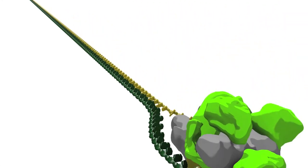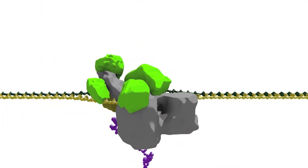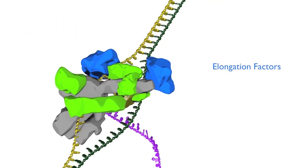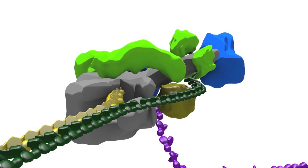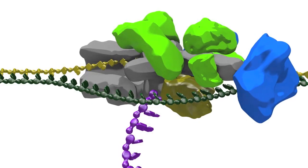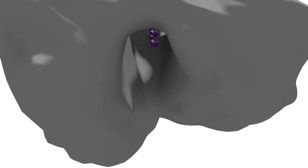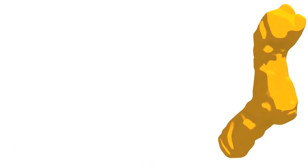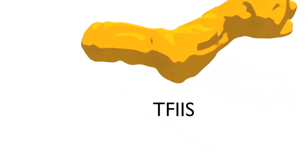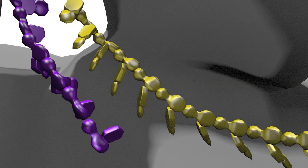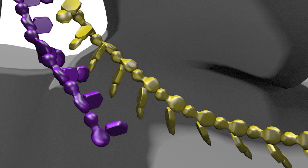RNA polymerase doesn't always make it to the end of the coding sequence in one smooth journey. Instead, RNA polymerase can sometimes stall before reaching the end of the transcribed region. The polymerase can be restarted by the binding of elongation factors, but sometimes it starts to backtrack, meaning that the polymerase slides backwards along with the transcription bubble. This causes the 3' end of the growing transcript to become unpaired and come out through the funnel region. The transcription factor TF2S can rescue the stalled polymerase by binding in the funnel region and promoting cleavage of the unpaired 3' end of the RNA, exposing a new 3' hydroxyl correctly positioned in the active site so that transcription can resume.